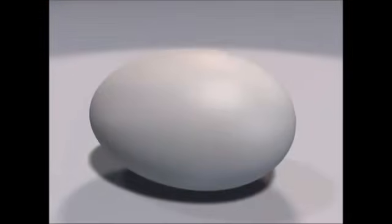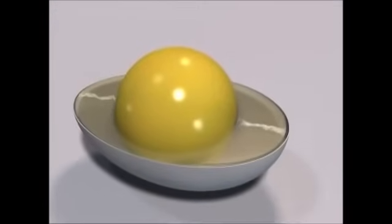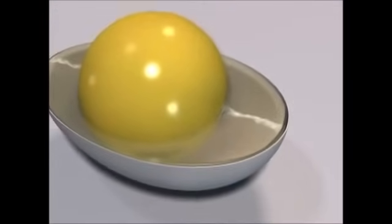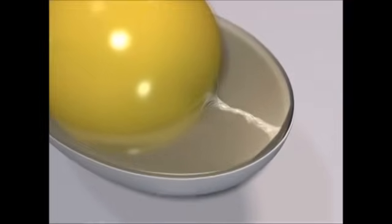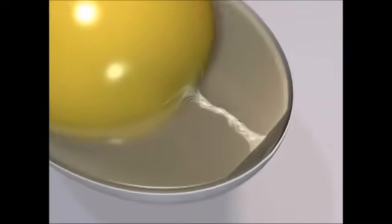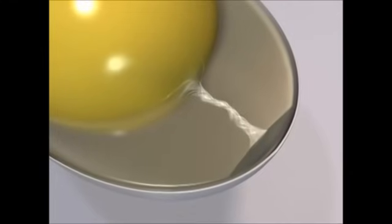As the egg cools, the inner portion contracts, and forms an air cell between the two shell membranes. A chick would puncture and breathe through the air in this cell before hatching.